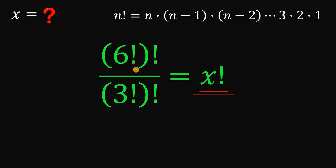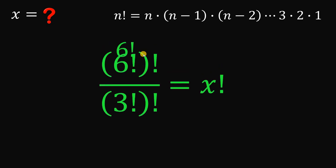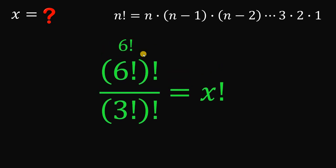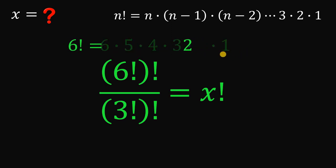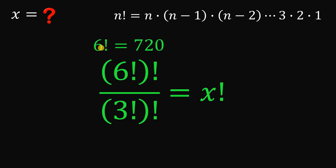Using this definition, 6 factorial must be equal to 6 times 5 times 4 times 3 times 2 times 1. If we multiply these numbers, we get a value of 720. So 6 factorial equals 720.